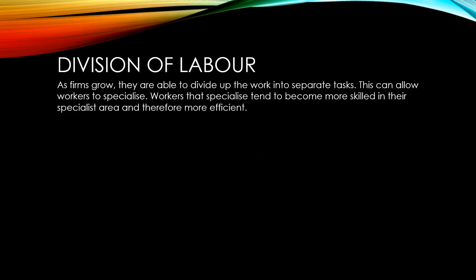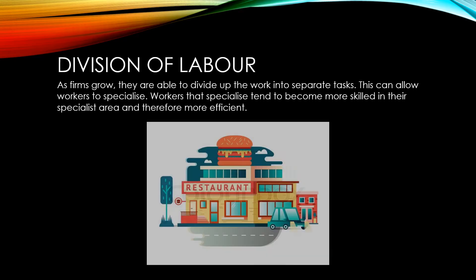As firms get larger, they're able to divide up their work into separate tasks, which can allow their workers to specialise. Workers that are specialised and do one task repeatedly tend to become more skilled in that area and therefore more efficient. An example of the division of labour can be seen in your local burger restaurant, where each worker has separate roles: there may be people serving customers, someone working the drive-through, someone doing the fry cooking, and someone working on the grill. By combining the efforts of all these people, a burger restaurant is able to far more efficiently produce a burger than an individual takeaway where one person has to do everything.